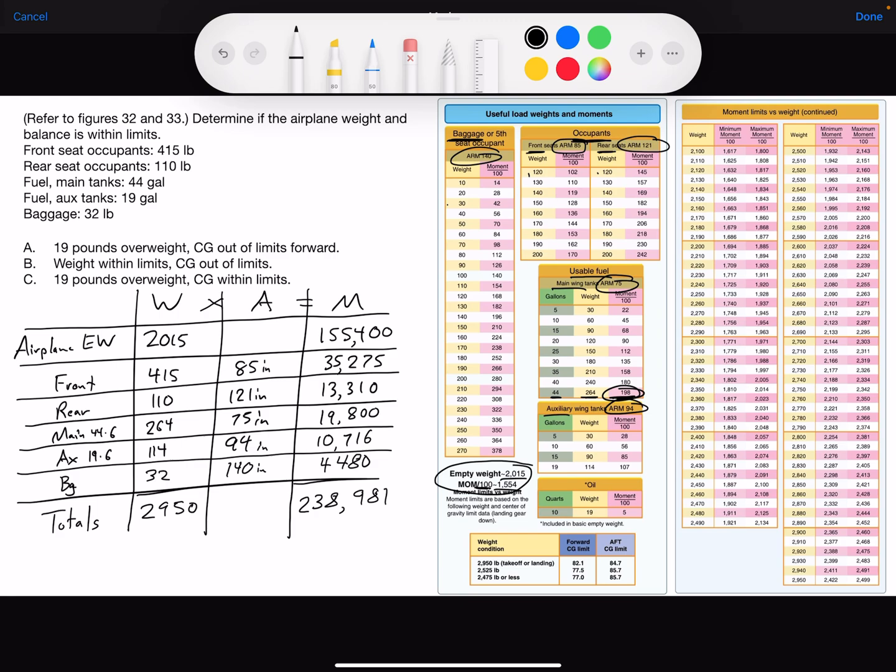To determine if you're within limits, you'll find your weight of 2,950 listed in this table on the right. So we're looking at weight and there it is at the very bottom right, 2,950. And what we need to determine is, keeping in mind the table is in hundreds, so I'm going to put a decimal point here...